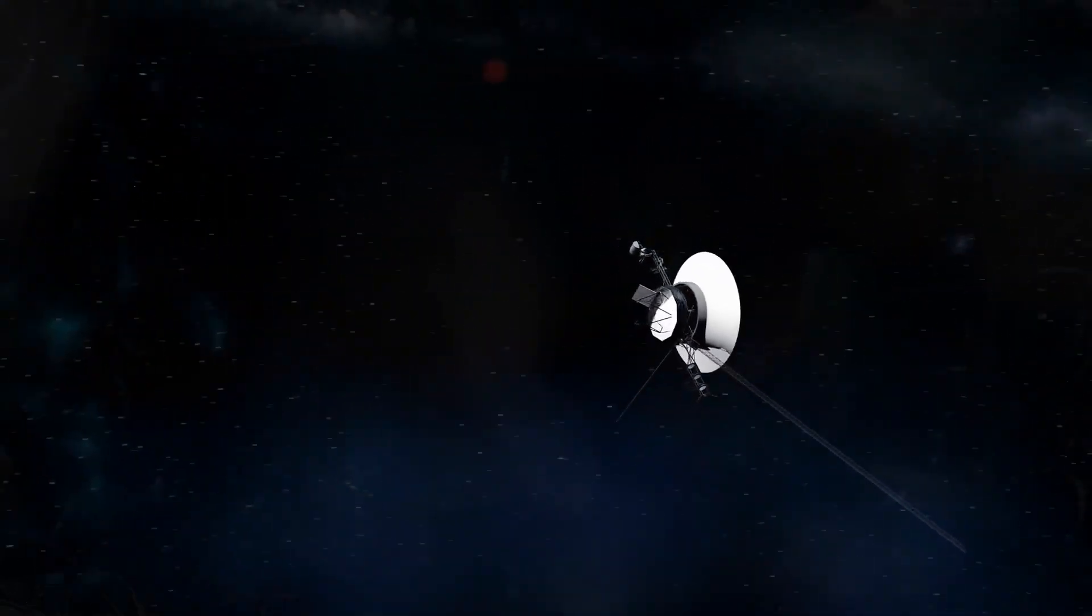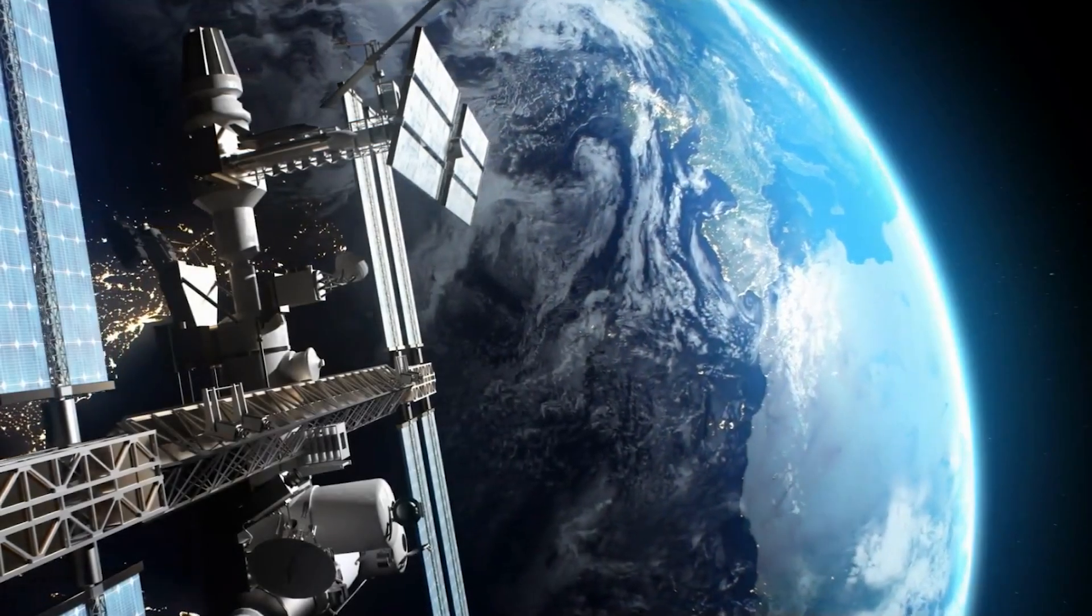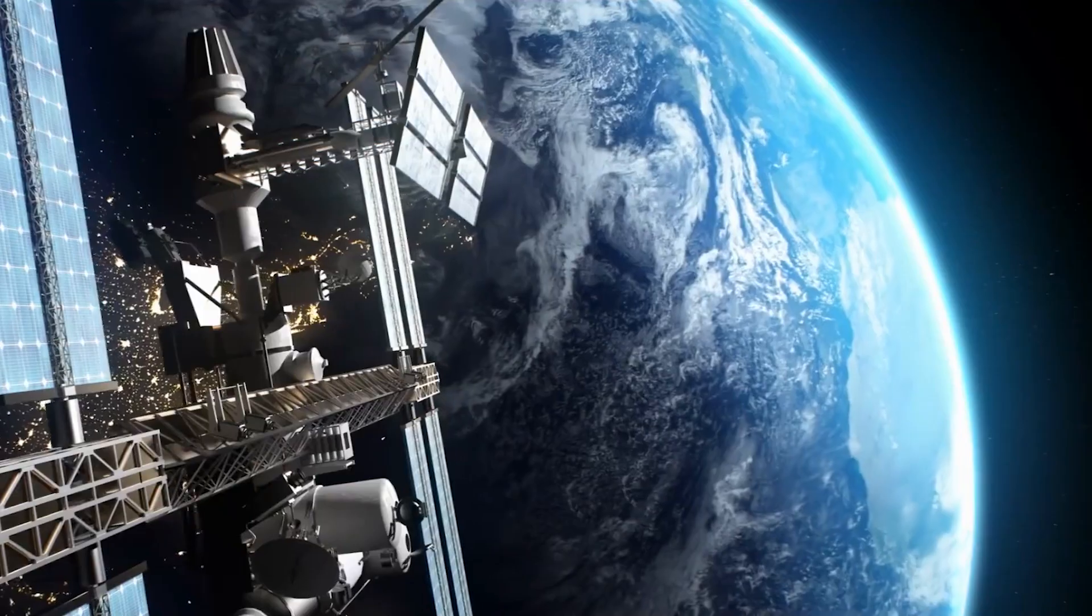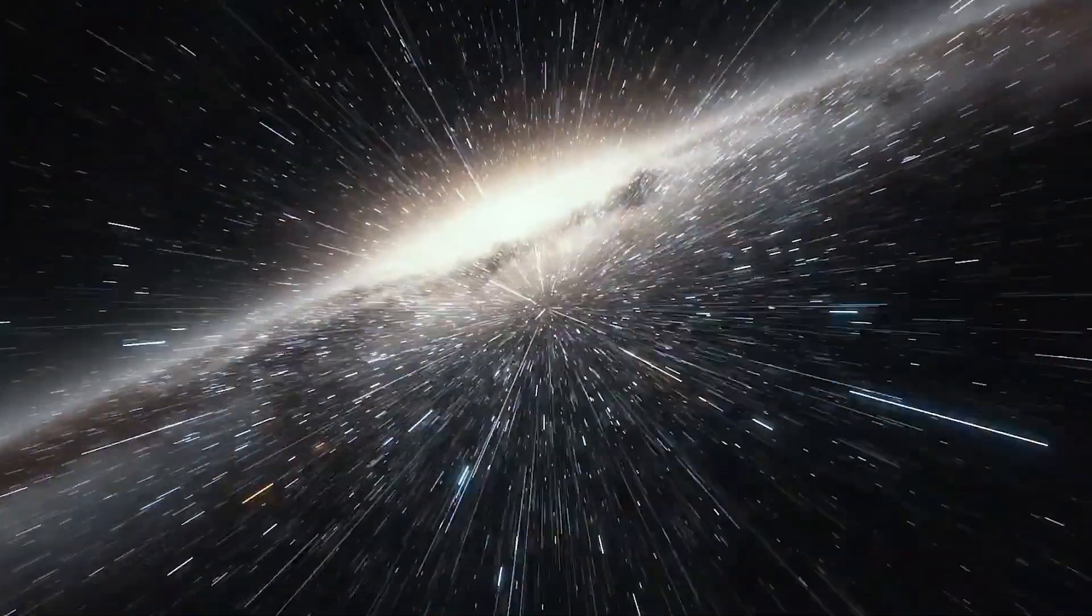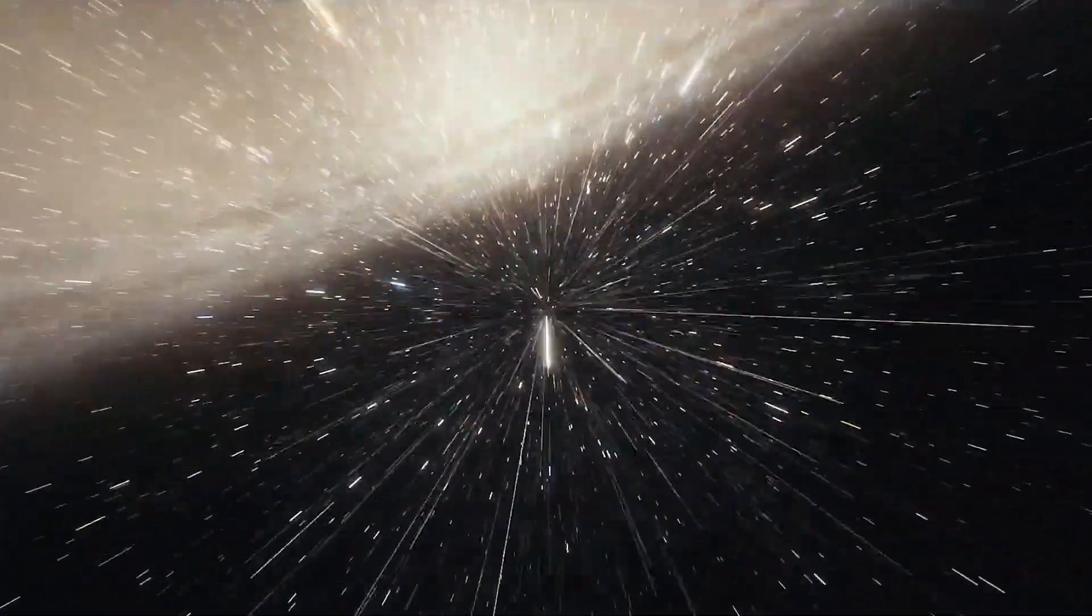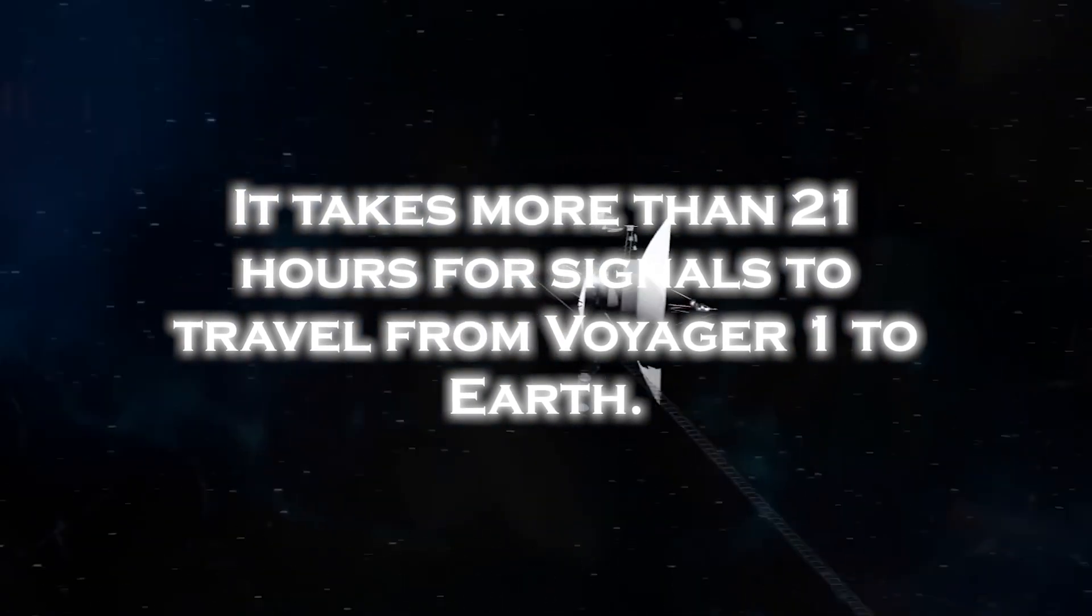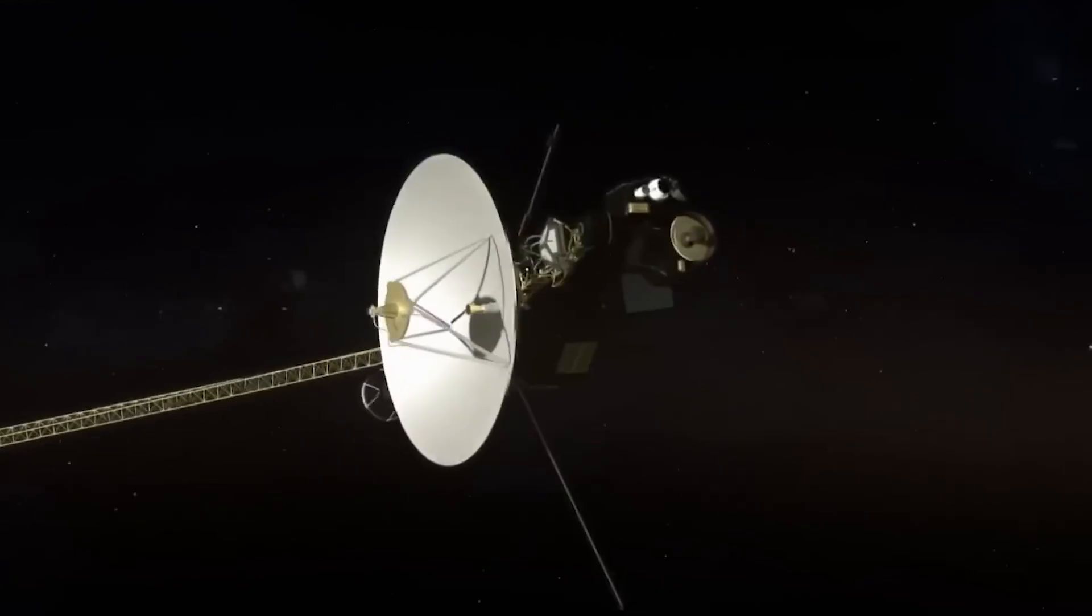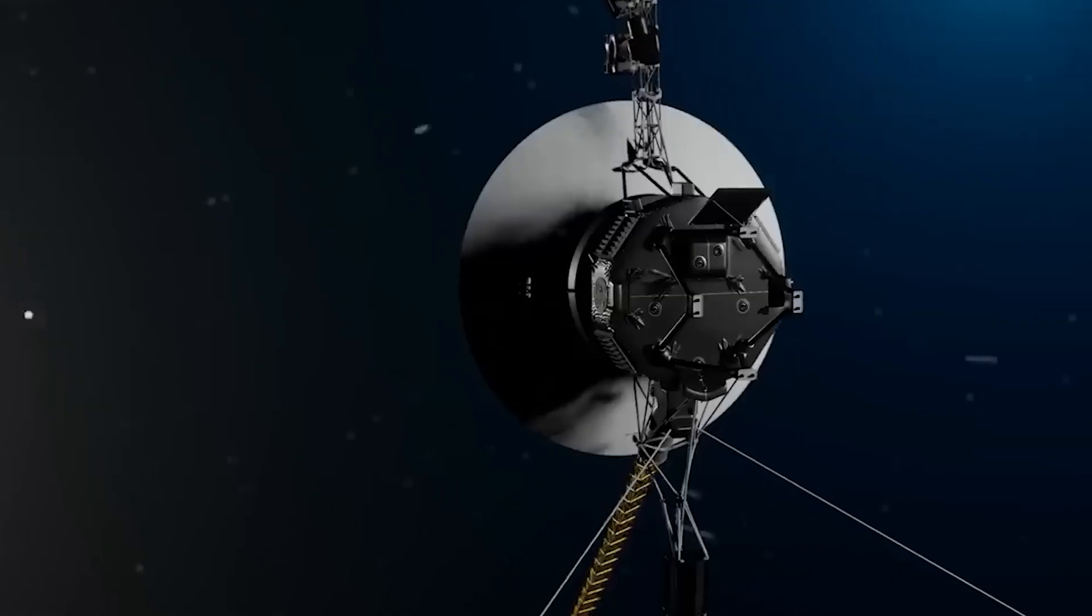Even in its current state, though, it is still very valuable to us. However, the great distance between Voyager 1 and Earth presents a significant challenge to maintaining effective communication. As the spacecraft ventures into interstellar space, Voyager 1's signal strength has weakened. It takes more than 21 hours for signals to travel from Voyager to Earth. The weak signal, combined with interference from background noise, makes it difficult to transmit and receive data.